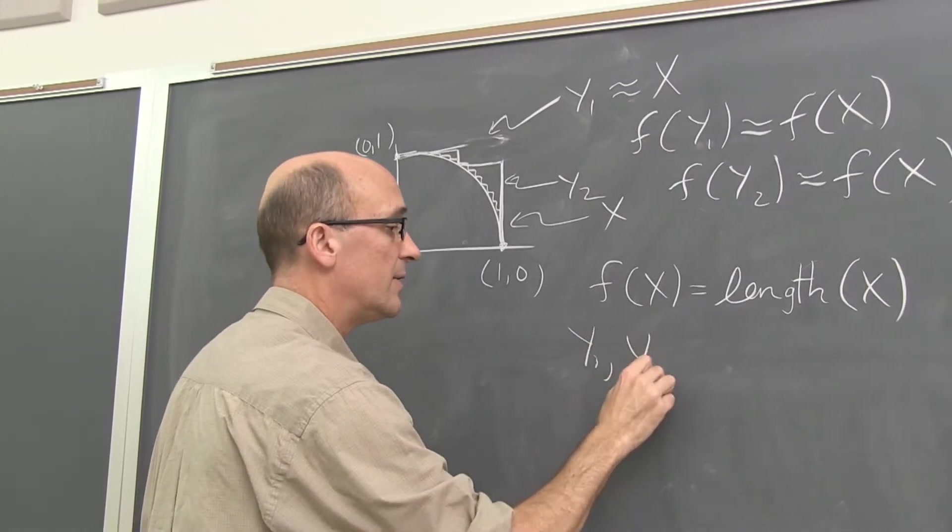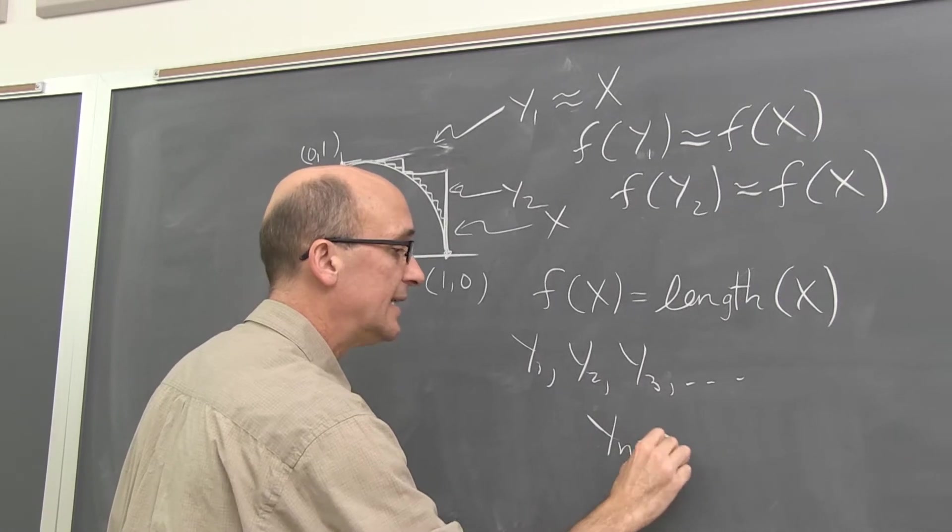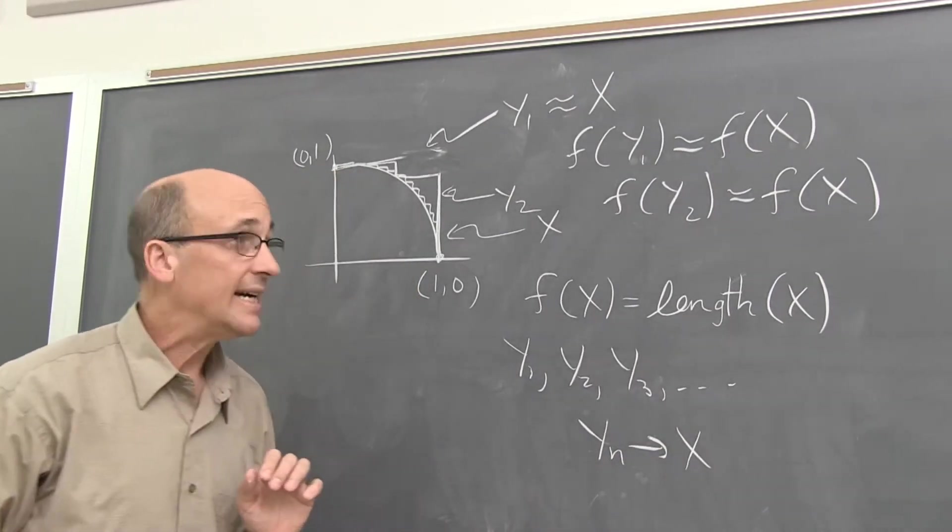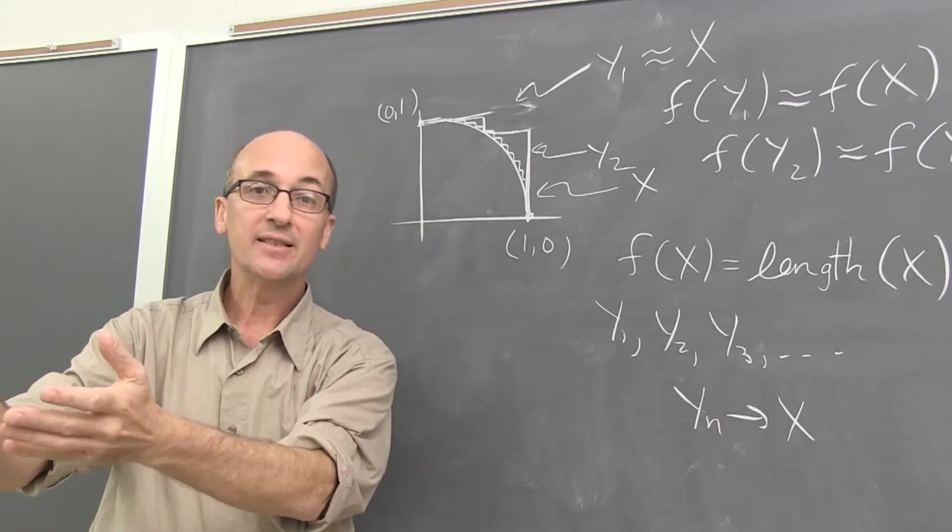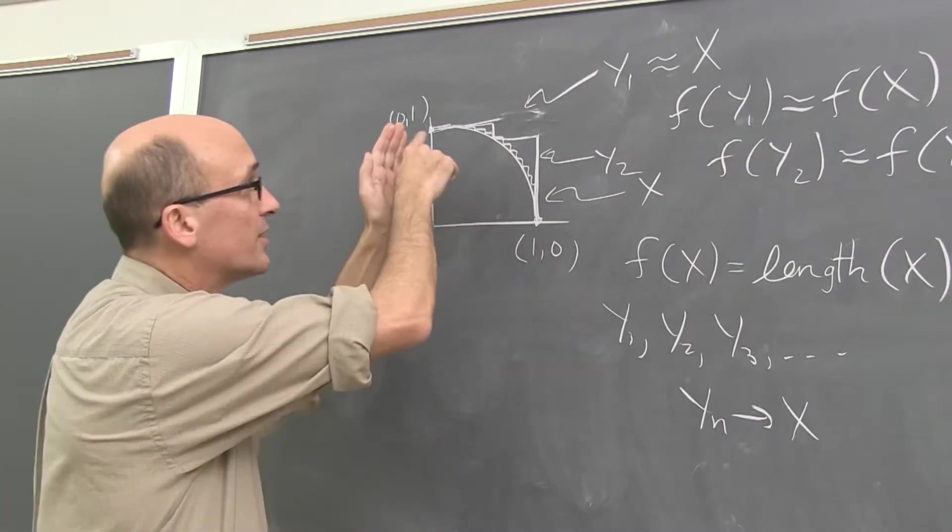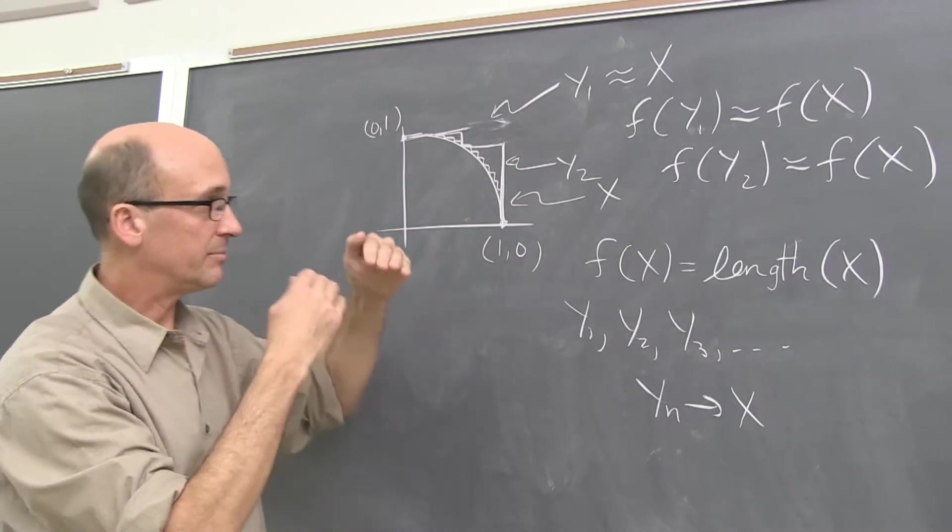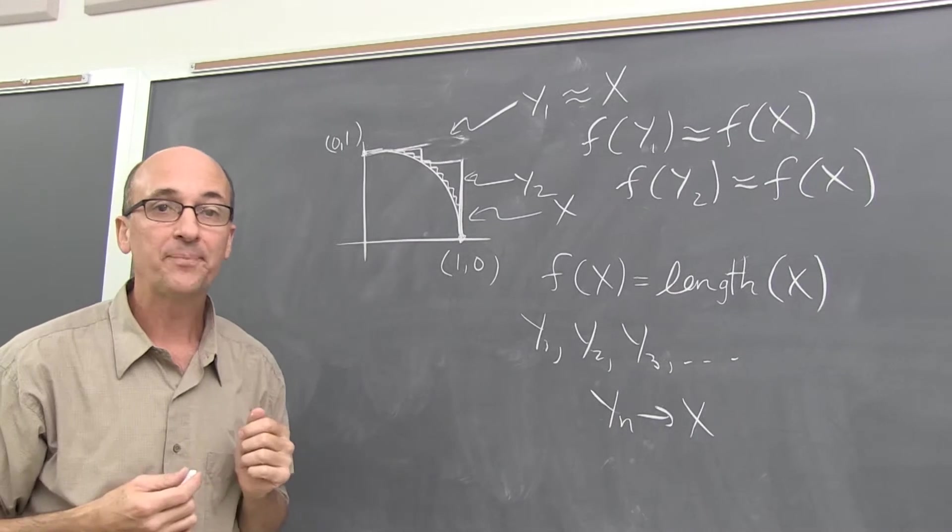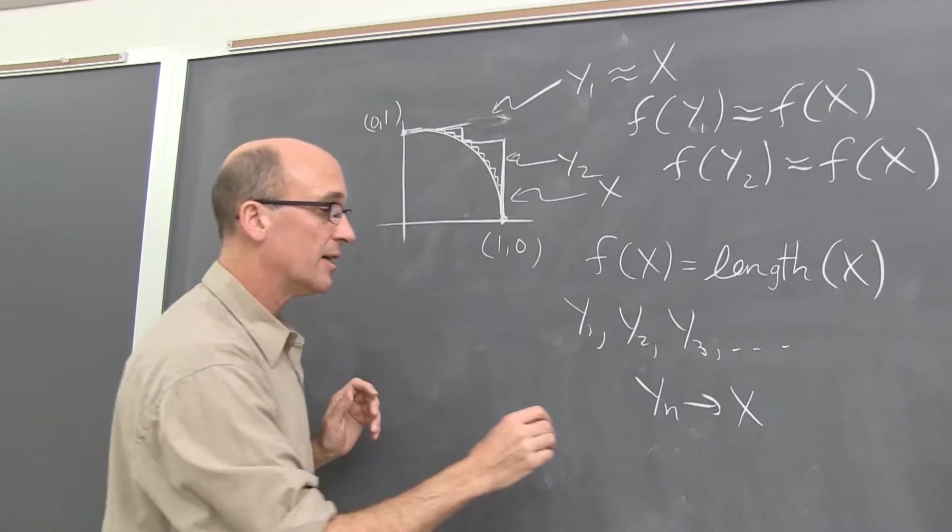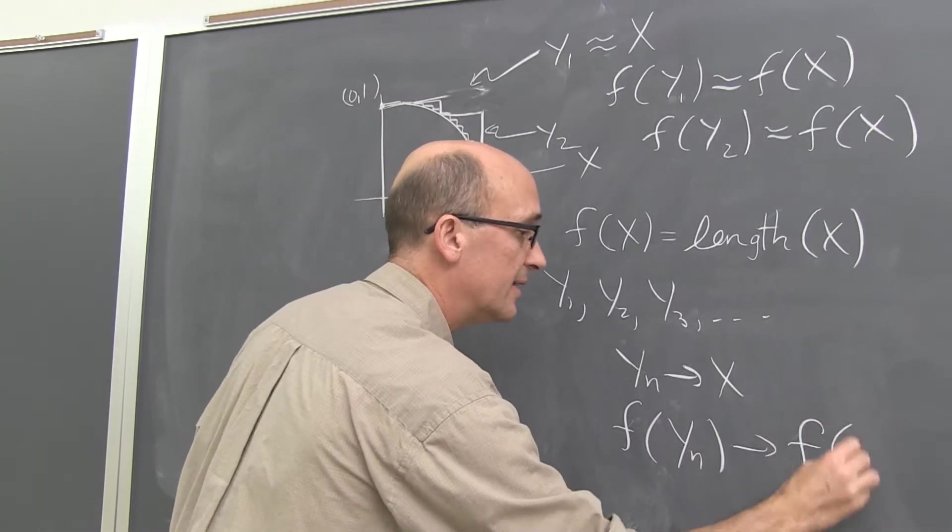you can imagine this little sawtooth stair step picture becoming quite a close fit to the curve X. So Y1, Y2, Y3, and so on with Yn, in a very meaningful way, getting close to X. You can see this when you stand at the back of the room. We can draw fine enough stair steps so that you can't even see the difference. We get beyond the resolution of our eyes, and it looks like a perfect fit. Of course, it's not perfect. But the hope is f of Yn is approaching f of X.